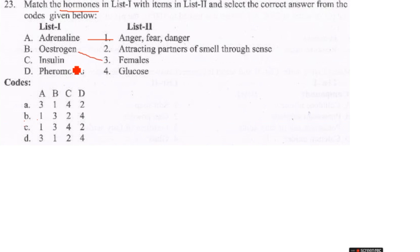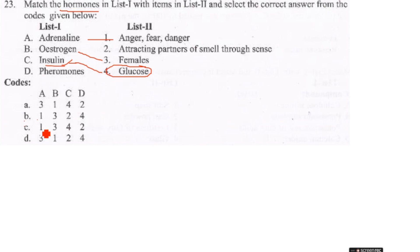Insulin — regulates blood sugar levels in the body. A chemical function in the skin — pheromones — for attracting the opposite sex. These hormones travel through the blood.